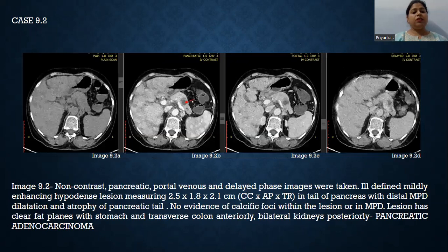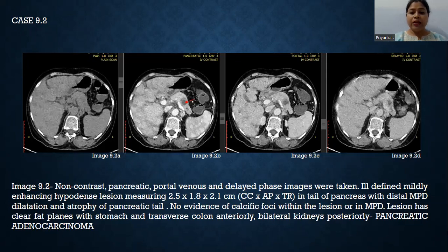This is another case of pancreatic adenocarcinoma. There is an ill-defined, mildly enhancing hypodense lesion in the tail of the pancreas with distal MPD dilatation and atrophy of the pancreatic tail. There is no evidence of calcific foci within the lesion or in the MPD. The lesion has a clear fat plane with the stomach and transverse colon anteriorly and bilateral kidneys posteriorly.